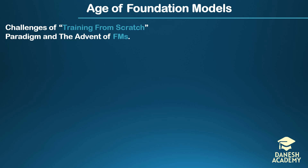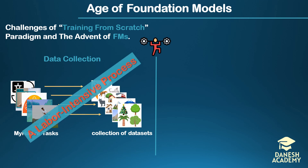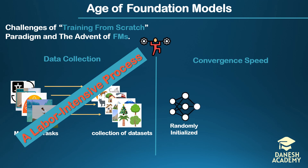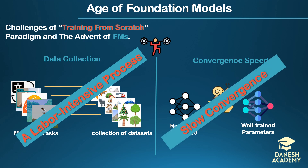Despite the remarkable success achieved by leveraging end-to-end trainable deep neural networks across various domains, training from scratch presents two significant challenges. The first is data collection: gathering large-scale, task-specific, and cross-label datasets for deep neural network training is a labor-intensive process. The second is convergence speed: since model parameters are updated from randomly initialized weights, deep neural network training under the classical from-scratch setup often suffers from slow convergence.